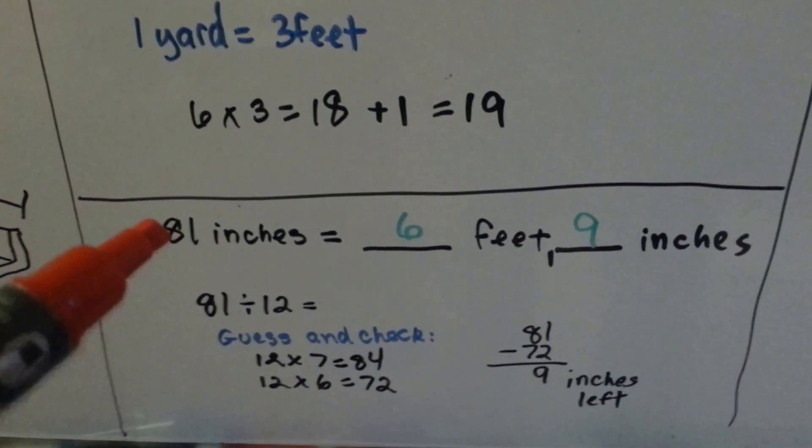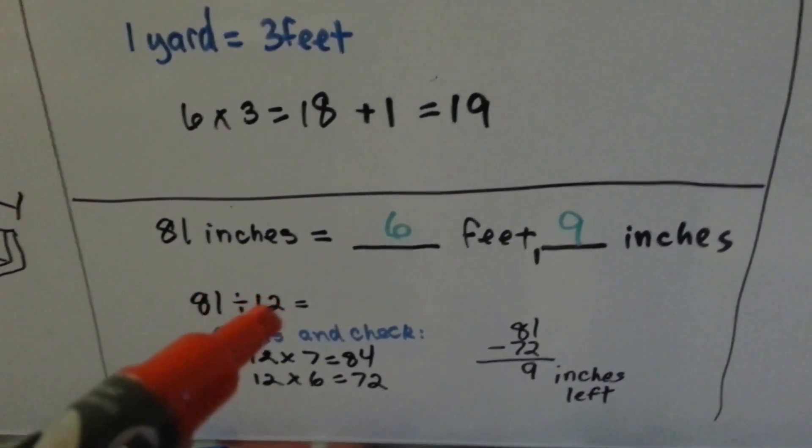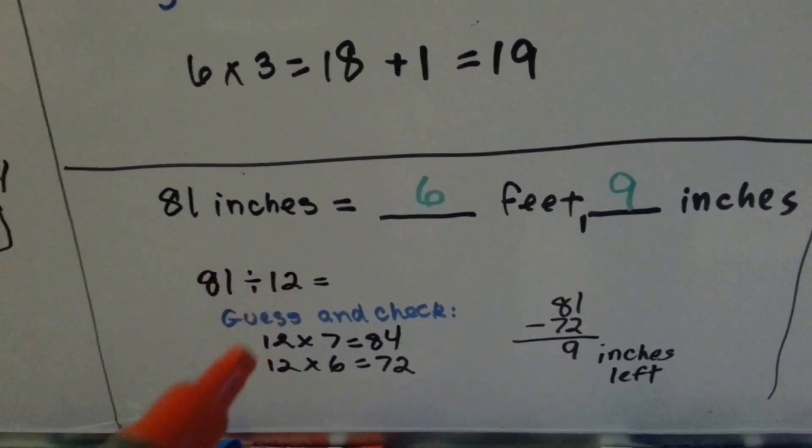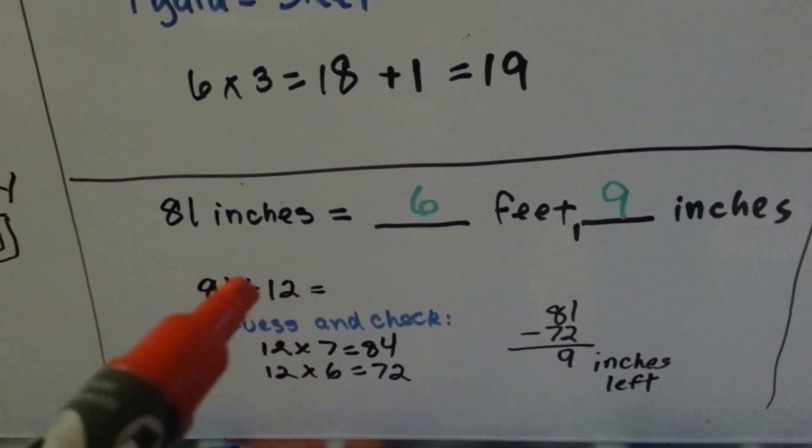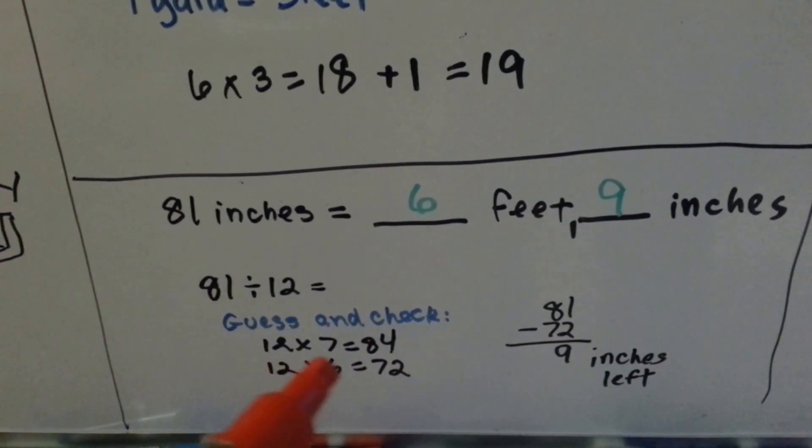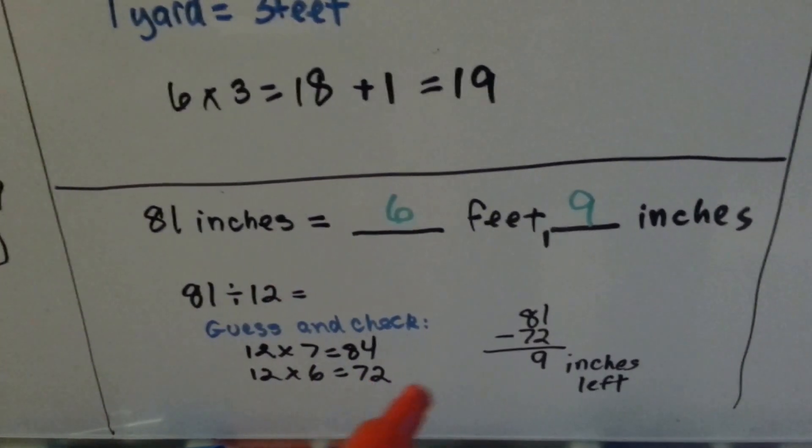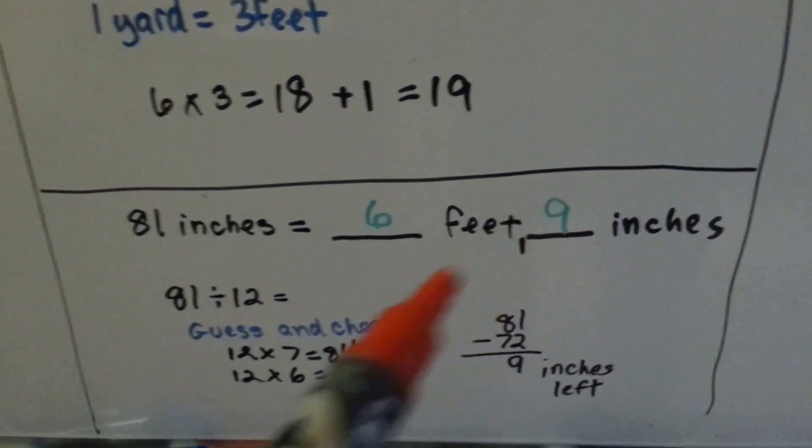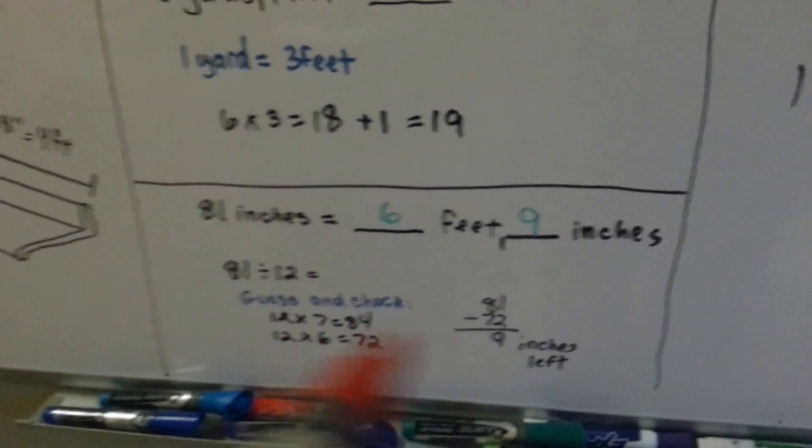If you had 81 inches and you wanted to put it in feet and inches, you could do 81 divided by 12, because there's 12 inches in a foot. You could guess and check the 81 divided by 12, and say, well, 12 times 7 is 84, so now we're using multiplication to divide. 12 times 7 is 84, that's too much, so 12 times 6 is 72, so there's 6 feet. But what's left over because of the 72? Then we do subtraction. 81 minus the 72 leaves 9 inches, so we know it's 6 feet, 9 inches for 81 inches. We used a lot of math, different math there.